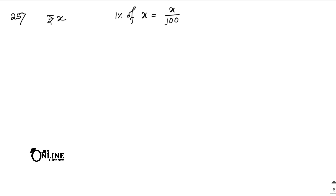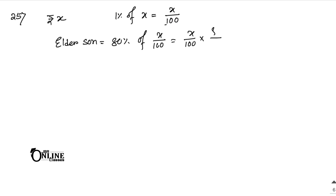The elder son gets 80 percent of the total amount given. So the amount for the elder son equals x by 100 into 80 by 100, which simplifies to 8x by 1000. He then spends 80 percent of his share, so the spend amount equals 8x by 1000 into 80 by 100, giving 64x by 10000.